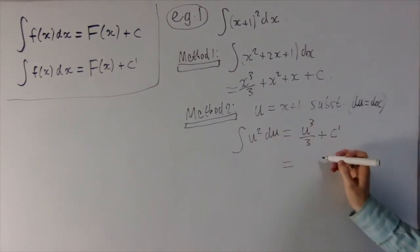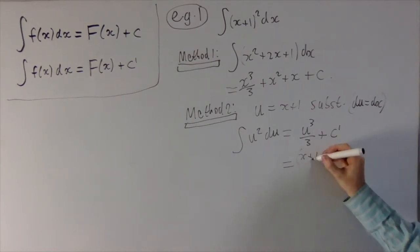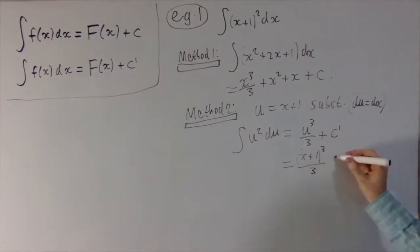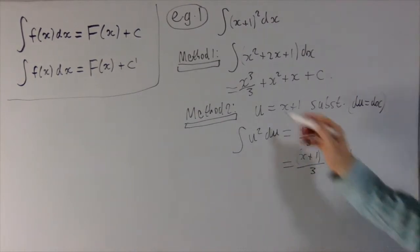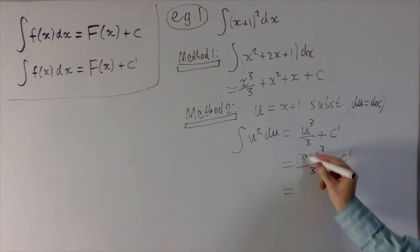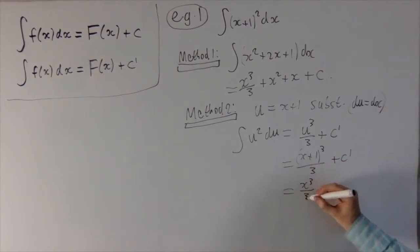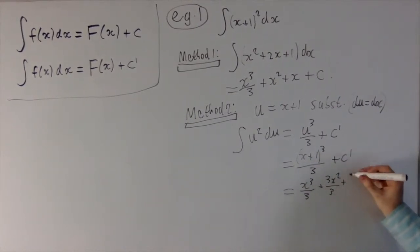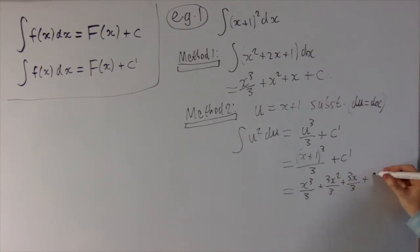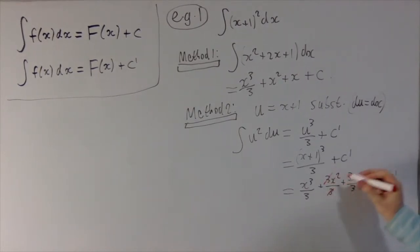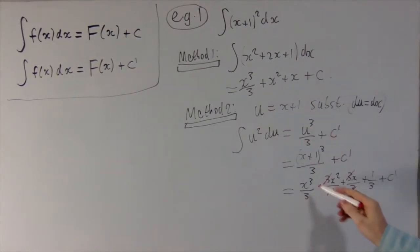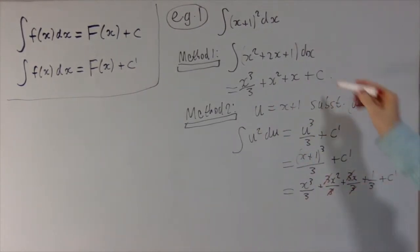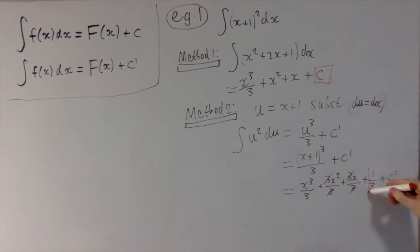Of course, what we need to do now is rewrite this in terms of x. It's not immediately obvious that these two are even equivalent, but if we expand the brackets here, we get x cubed over 3, plus 3x squared over 3, plus 3x over 3, plus one third, plus c dash. You'll see the 3s cancel, so this does match up: x cubed over 3, x squared, x. And here you've got c, while here you've got one third plus c dash.